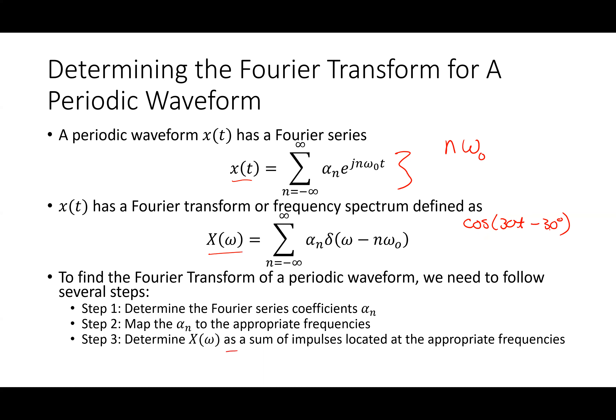X of omega is impulses at the frequencies where there's content in the signal. For cosine of 30t minus 30 degrees, the impulses are going to be at 30 radians per second — not the 30 degrees. And then there's another impulse at negative 30. So there's one at positive 30 and one at negative 30.